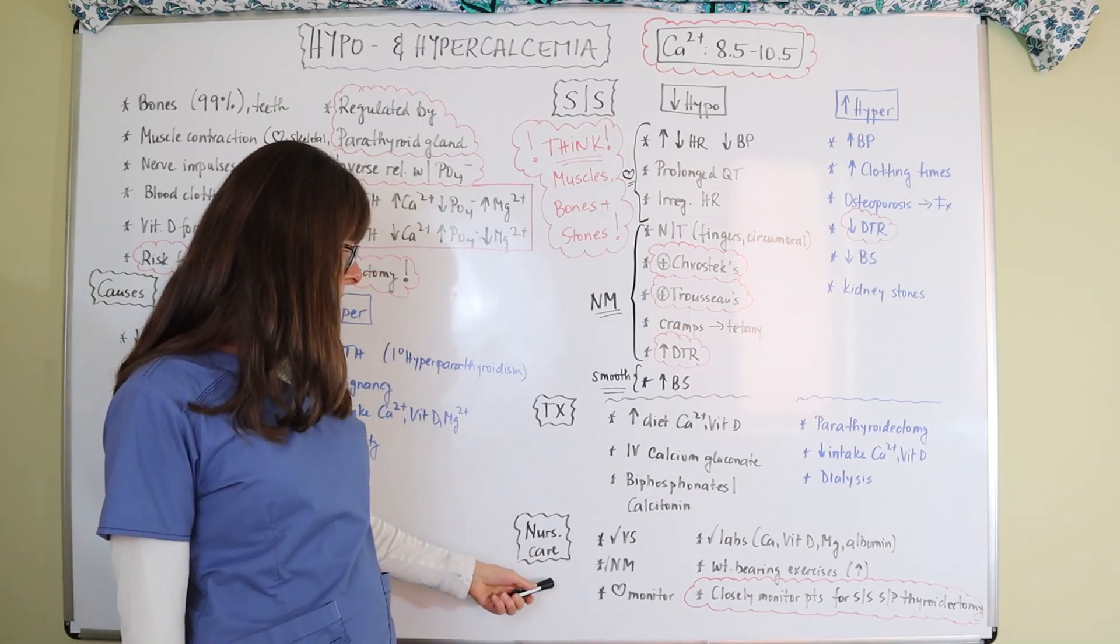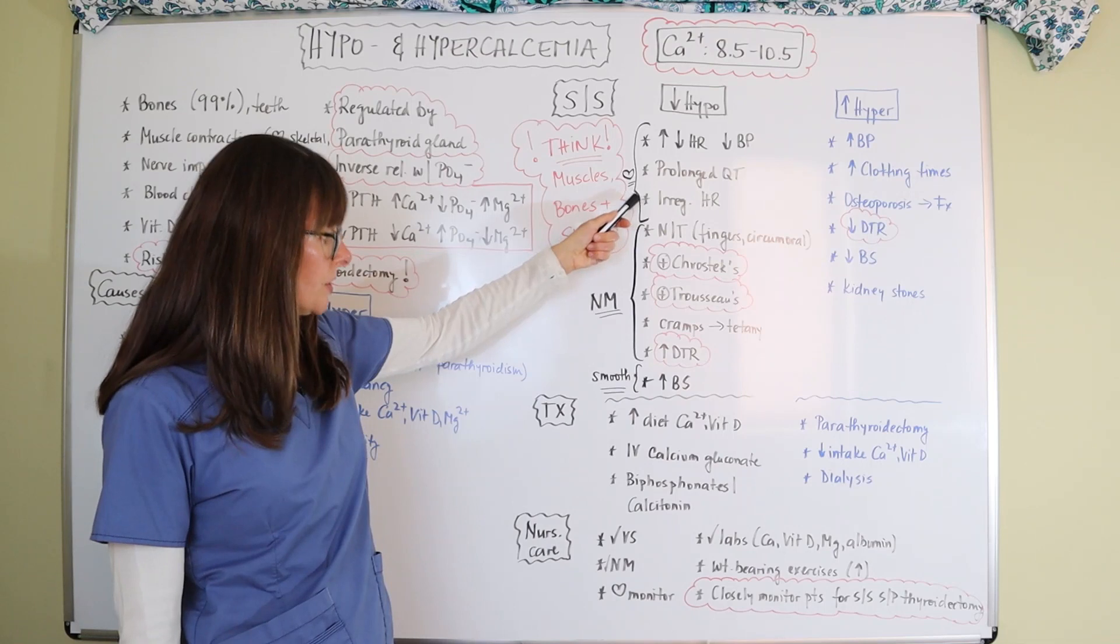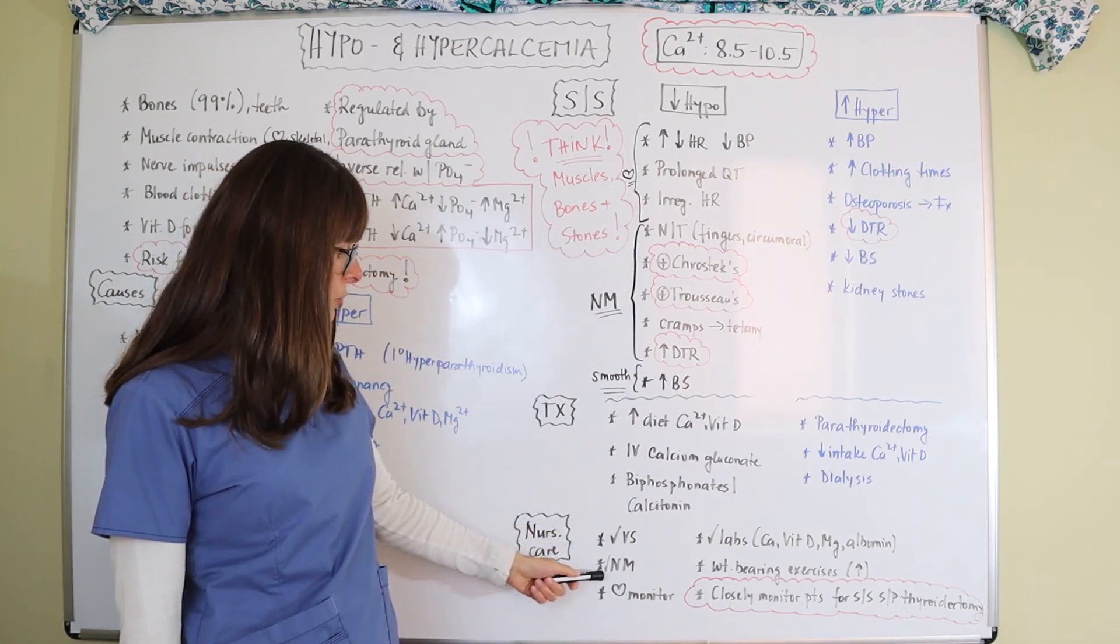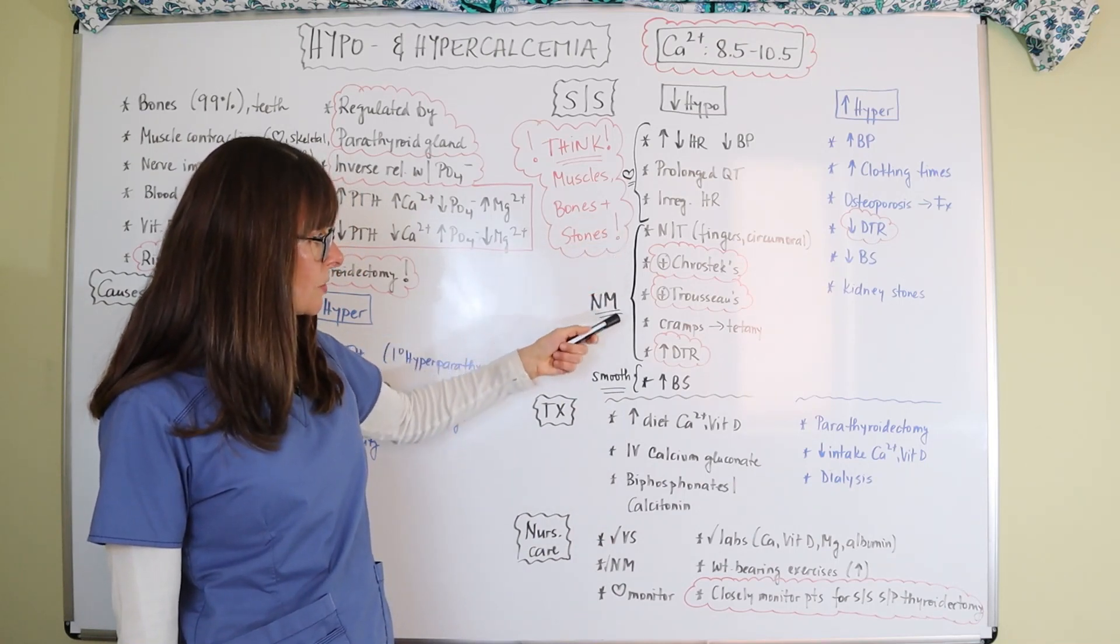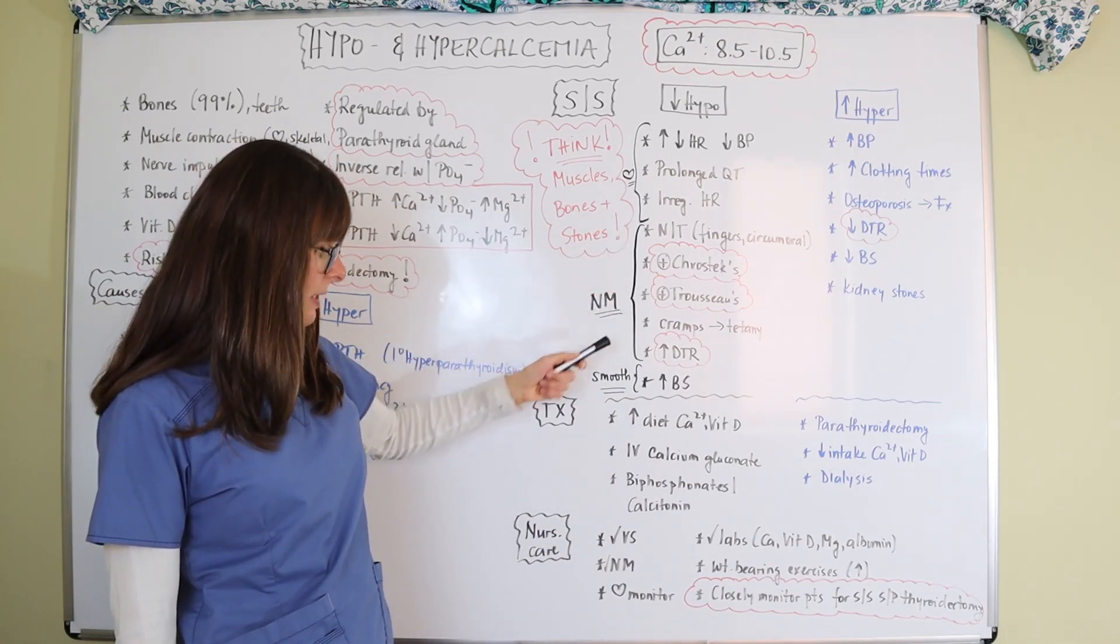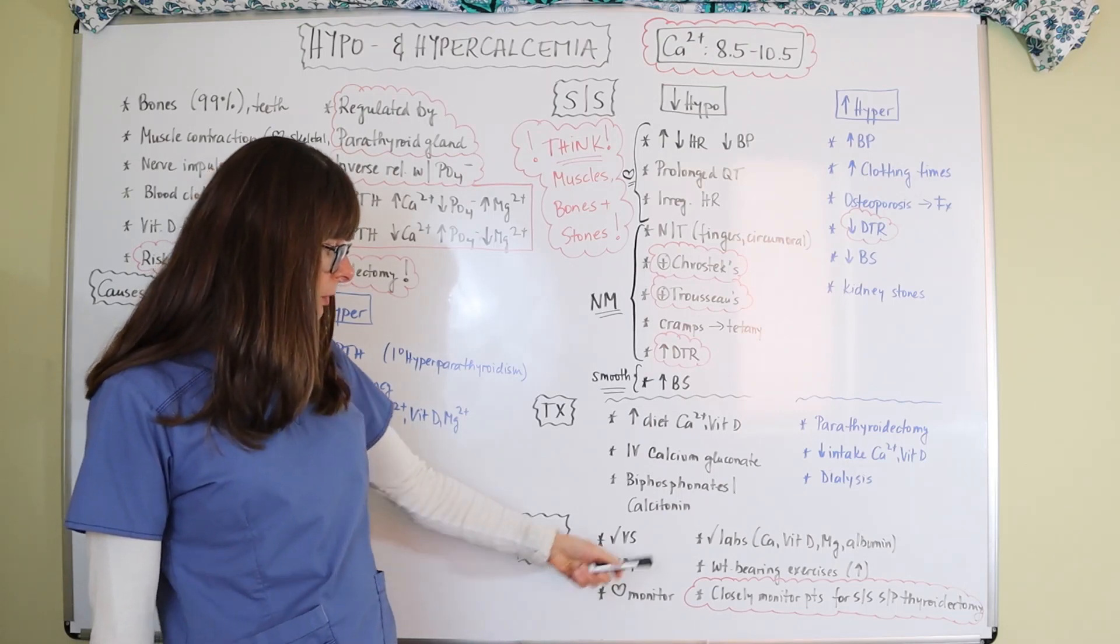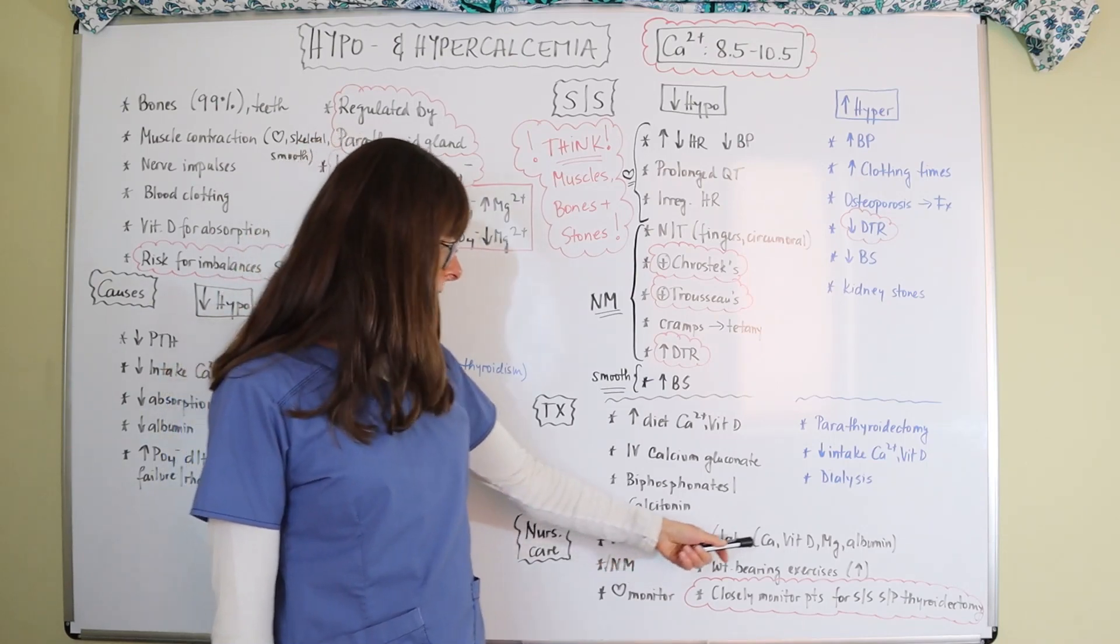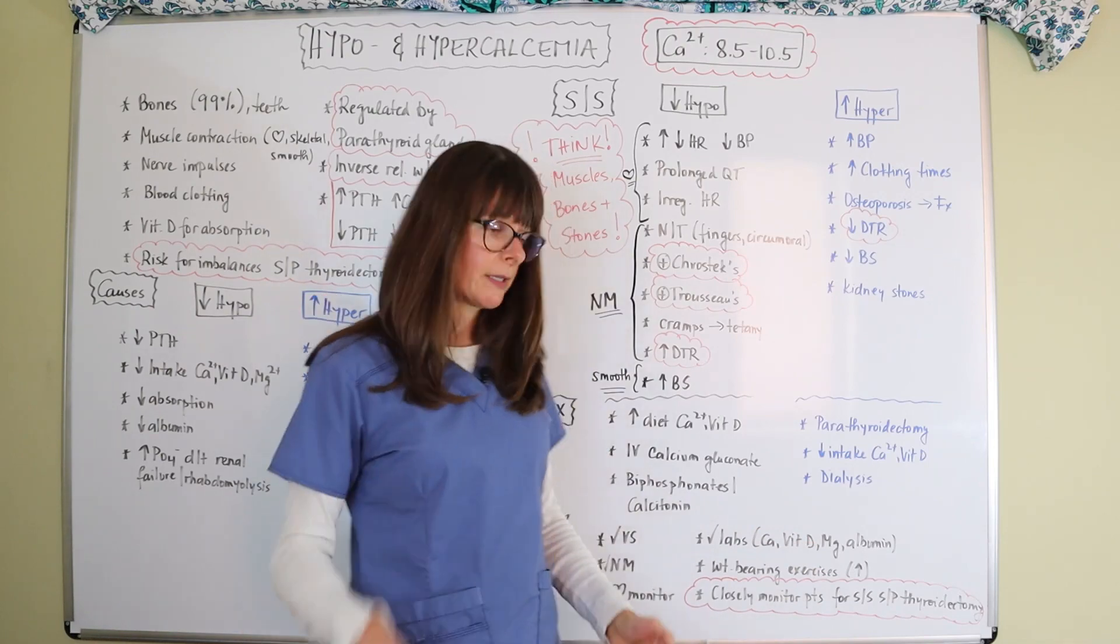In terms of nursing considerations, because we know it can affect vital signs as well as heart, we want to make sure we check vital signs frequently. We check those neuromuscular checks to check for numbness and tingling, Chvostek, Trousseau, cramps, and check their reflexes. And we want to put them on a cardiac monitor. We want to keep a close eye on their labs, all of those that are related: calcium, vitamin D, magnesium, as well as the albumin.